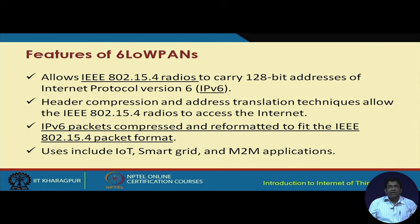6LoWPAN allows IEEE 802.15.4 radios — the protocol we covered in a previous lecture which operates at the physical and MAC layers — to carry 128-bit addresses of IPv6. Essentially, 6LoWPAN is a conceptual joining of IEEE 802.15.4 radios with IPv6. But how is this made possible, since 802.15.4 is a lightweight low-power protocol while IPv6 is not lightweight?